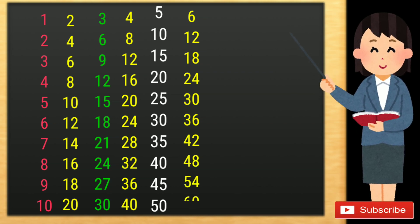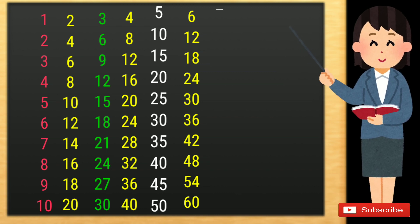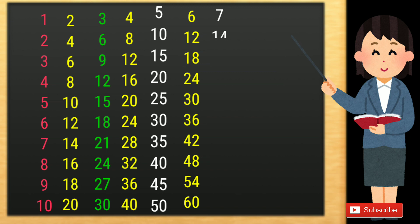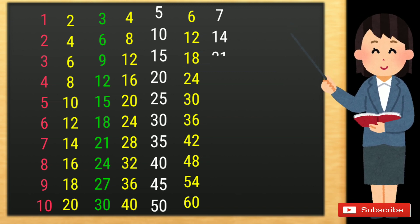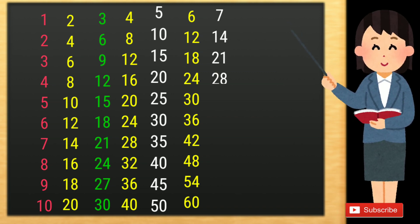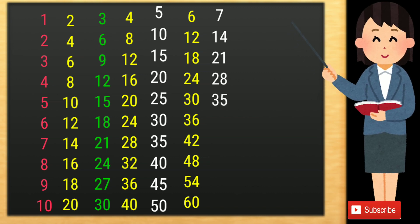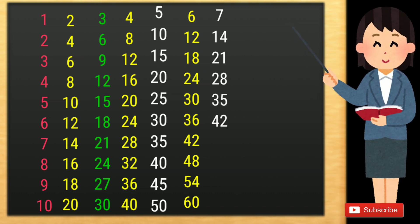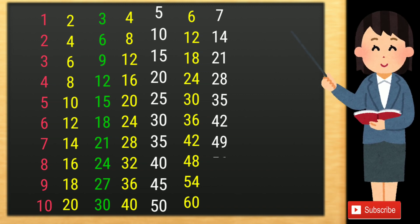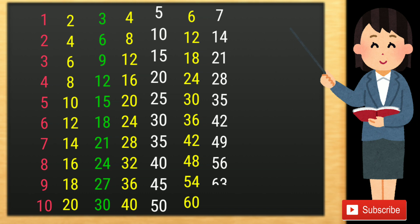6 10s are 60. 7 1s are 7, 7 2s are 14, 7 3s are 21, 7 4s are 28, 7 5s are 35, 7 6s are 42, 7 7s are 49, 7 8s are 56, 7 9s are 63.